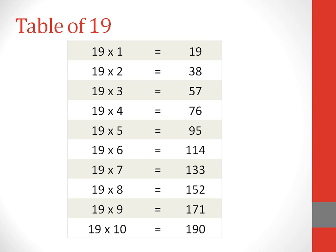19 sixes are 114. 19 sevens are 133. 19 eights are 152. 19 nines are 171. 19 tens are 190.